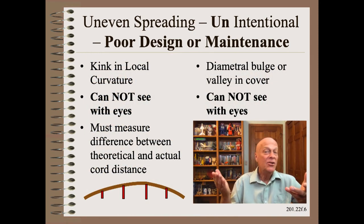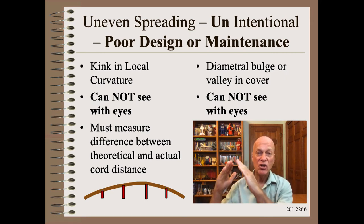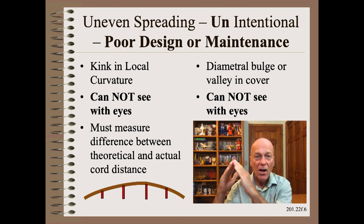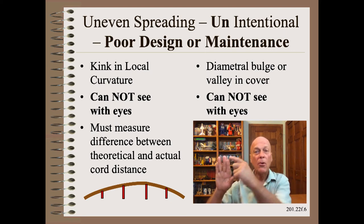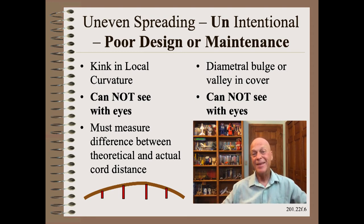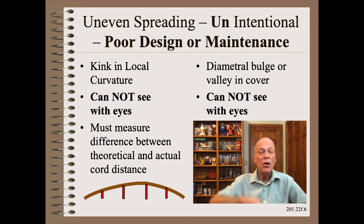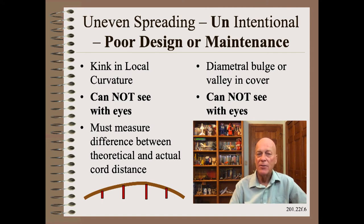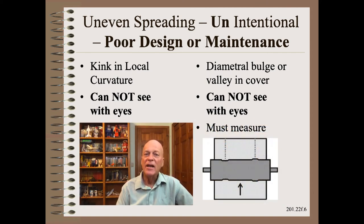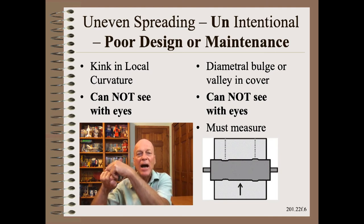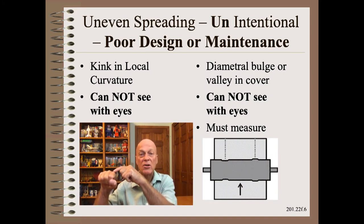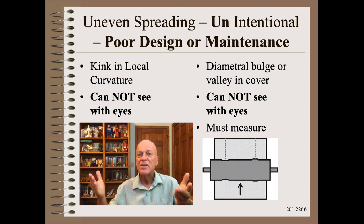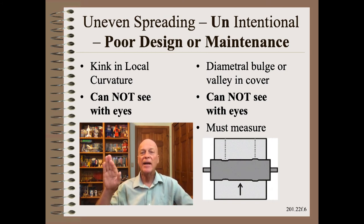No less common is uneven spreading on spreaders that have uneven manufacture, uneven wear, or uneven operation. An example we've already mentioned is a D-bar. If the operator adjusts a kink at the center of the bar to perhaps open up gaps there, the gaps at the quarter points will close up. That would be time to reset everything to a uniform curvature as described in the engineering service manual. Another example is bumps or valleys in the diametral profile of a roller. Here, the web will tend to move towards those surface errors and perhaps, in the process, close up the gaps there.